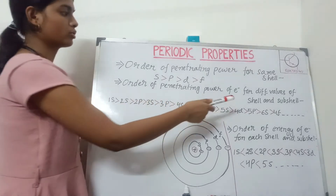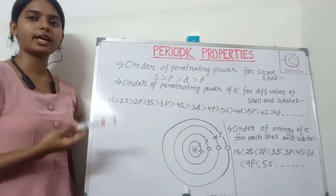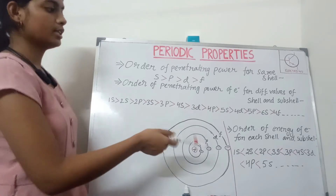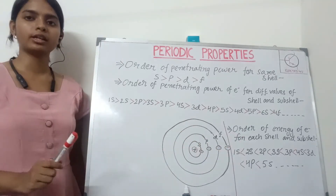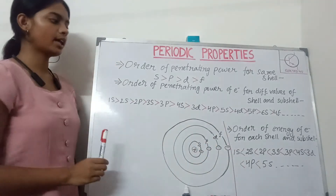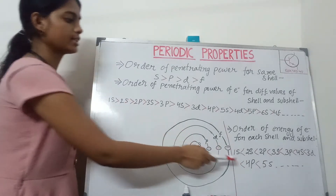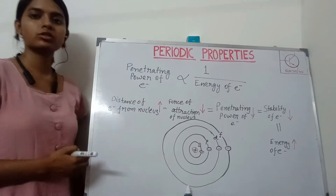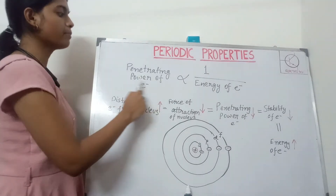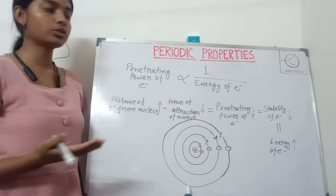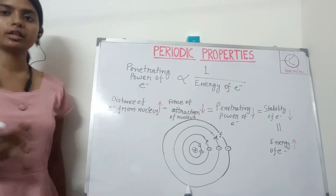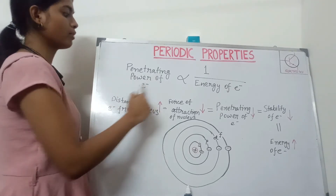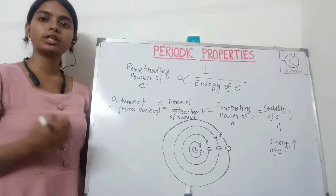The order of penetrating power of electrons for different shells and subshells, and the order of energy of electrons for each shell and subshell, are exactly opposite to each other. From this we can say that penetrating power of an electron is inversely proportional to the energy of that electron.